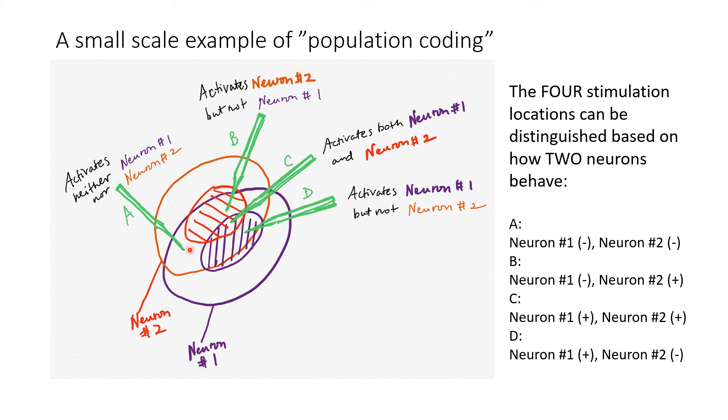So I'm showing four different locations, A, B, C, and D, in the stimulation graph. Stimulus A is in the off-surround for both neuron 1 and neuron 2, so I denoted them both with a negative sign right here.